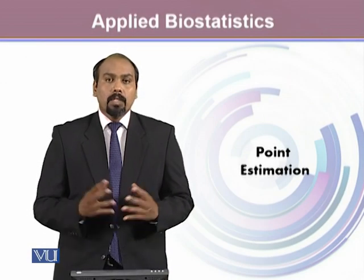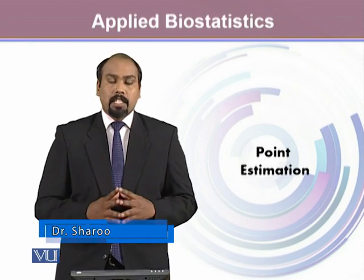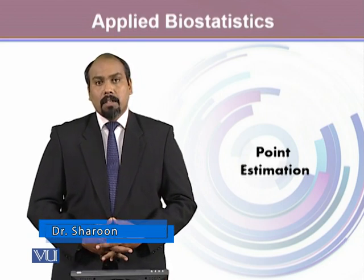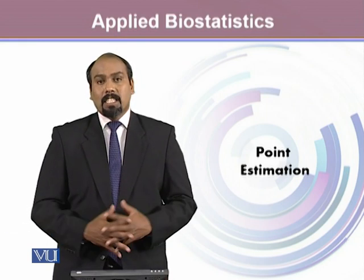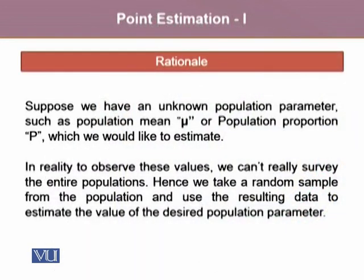In this module, we'll talk about one type of estimation called point estimation. We will also learn different methods used to estimate population parameter values. As we already know, population parameter values are usually unknown, like the population mean mu, the population proportion p, or the population variance sigma squared. Our goal is to estimate the unknown population parameter value.